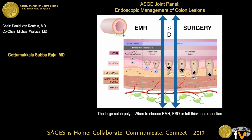Coming back to this picture: lesions that go to the muscle — T2 — should go for surgery. Lesions that go deep into the submucosa should also go to surgery. Lesions that are SM1 or less can be removed by endoscopic resection. You can safely resect up to 20-millimeter lesions with en bloc snare resection, maybe 25 millimeters if you're able to align your snare well. Beyond that, ESD is the way to go. Looking at Doug Rex's data, basically 1 in 10 may end up going for surgery if you practice high-quality EMR.